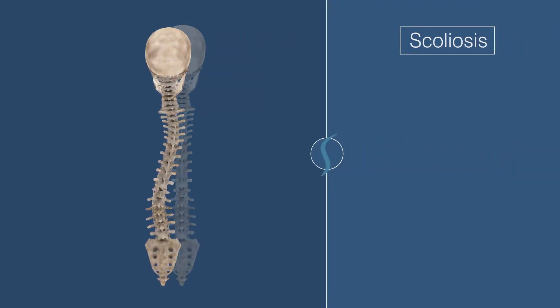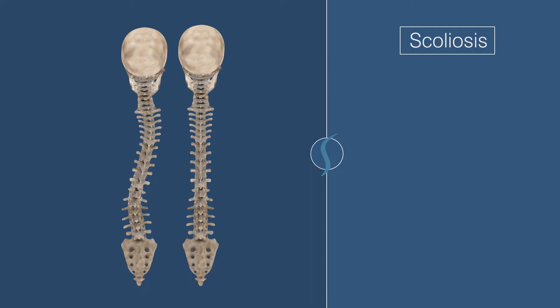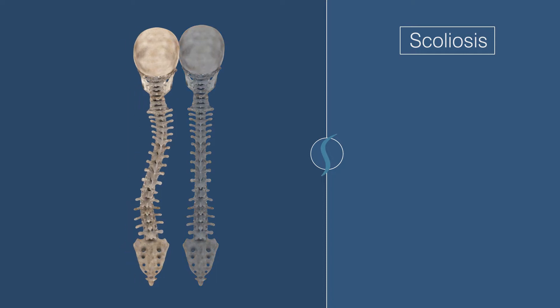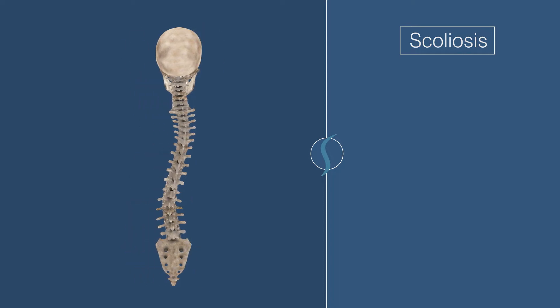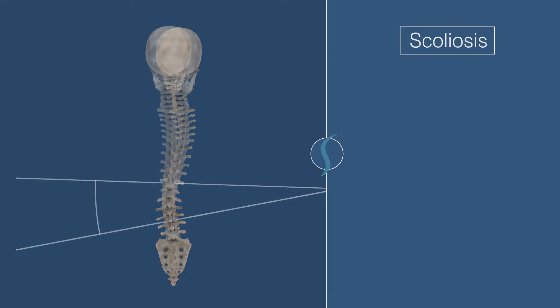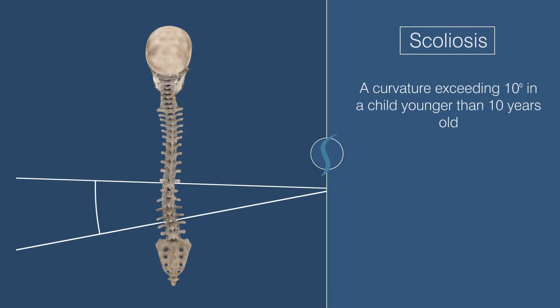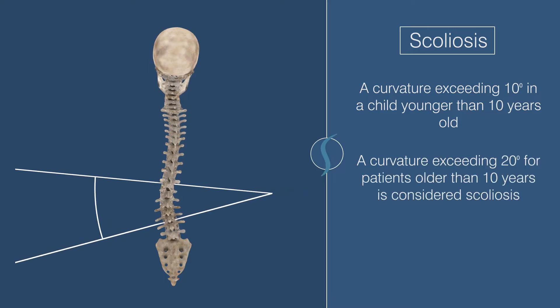When comparing a normal spine and scoliosis in this view, you'll immediately notice the abnormal sideways curve compared to the normal straight spine. Although a small degree of curvature is common, anything exceeding 10 degrees in children younger than 10, or 20 degrees for patients older than 10 years, is considered scoliosis.